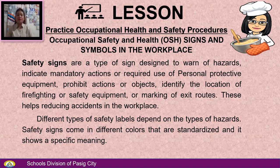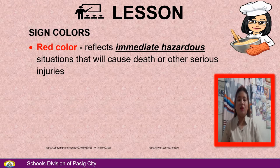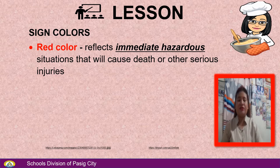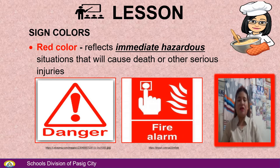Different types of safety levels depend on the types of hazards. Safety signs come in different colors that are standardized and show a specific meaning. Red color reflects an immediate hazard situation that will cause death or other serious injuries, like danger or fire alarm.